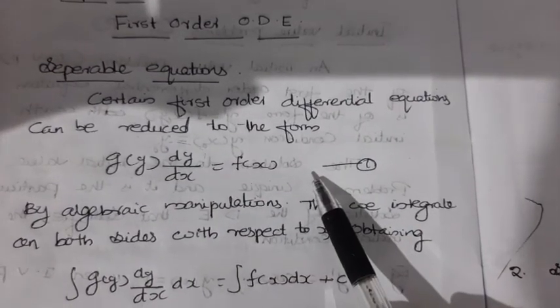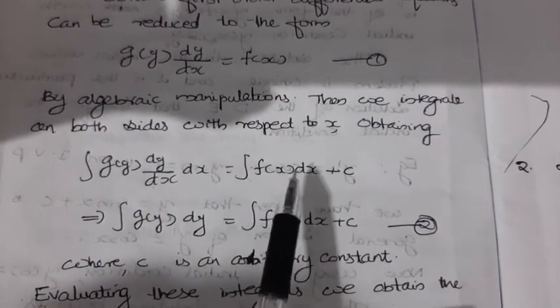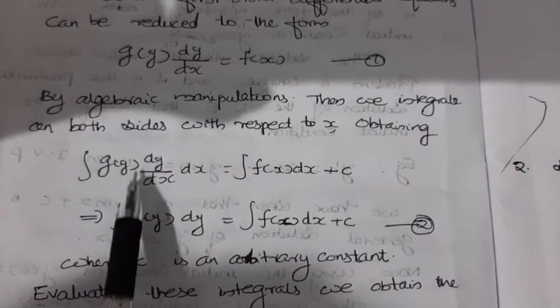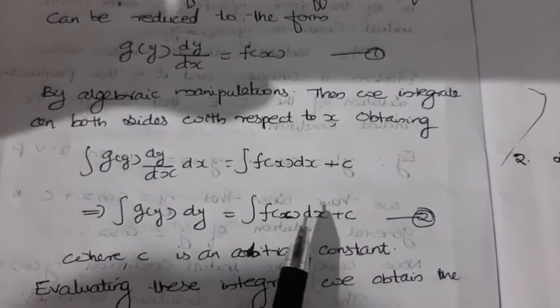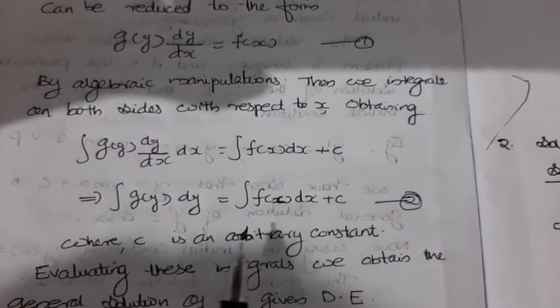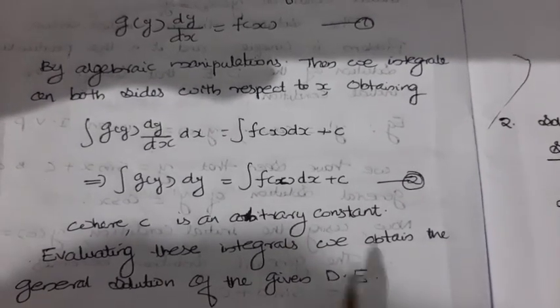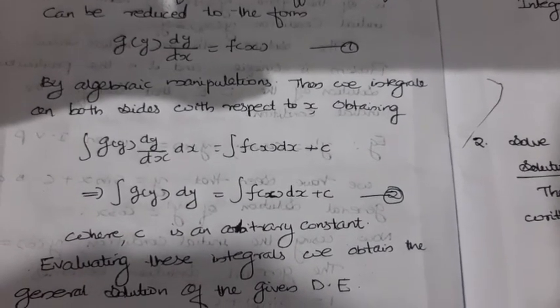The y terms are on one side and the x terms are on the other side. Then we integrate: integral of g(y) · dy = integral of f(x) · dx + c, where c is the arbitrary constant. Evaluating this integral we obtain the general solution of the given differential equation. This method is called the separable method, or separating variables, or separable form.